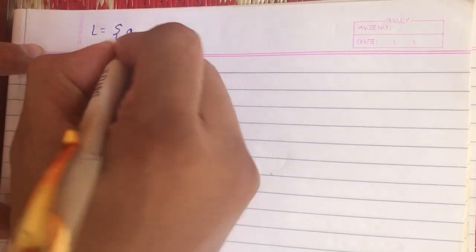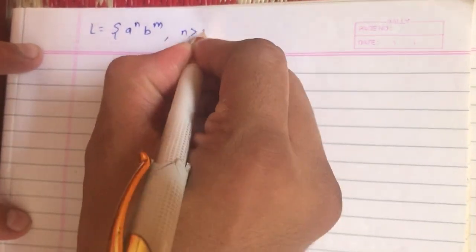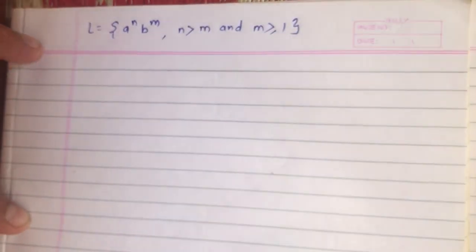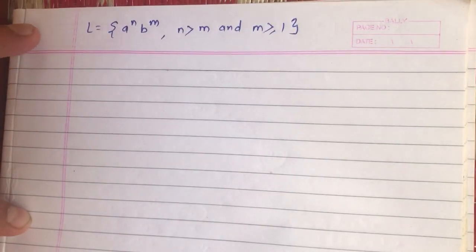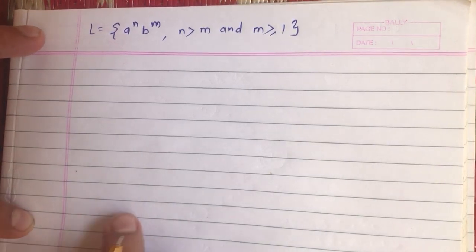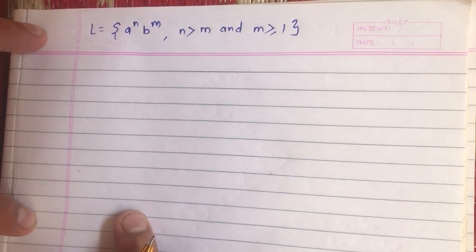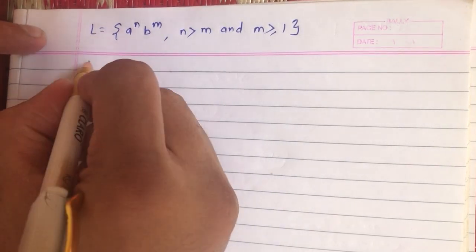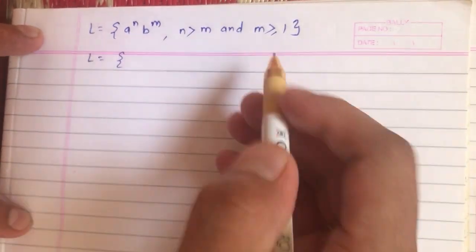Today we are going to discuss another problem of pushdown automata. Consider the language a^n b^m where n is greater than m and m is greater than or equal to one. In this language, strings comprise a's followed by b's, where the number of a's is greater than the number of b's, and there is a minimum of one b.